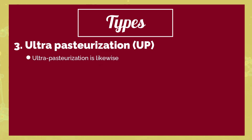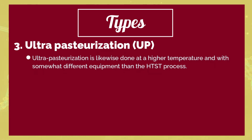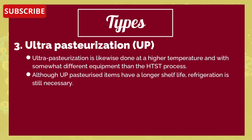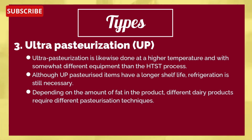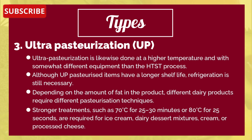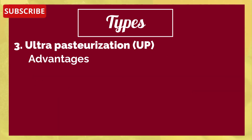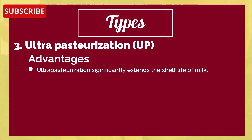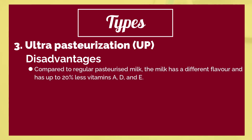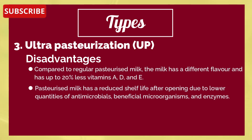The third type is ultra pasteurization, which is done at a higher temperature with somewhat different equipment than HTST. Although ultra-pasteurized items have a longer shelf life, refrigeration is still necessary. Different dairy products require different pasteurization techniques; stronger treatments such as 70°C for 25 to 30 minutes or 80°C for 25 seconds are required for ice cream, dairy dessert mixtures, cream, or processed cheese. Ultra pasteurization significantly extends the shelf life of milk. Disadvantages include different flavor compared to regular pasteurized milk and up to 20% less vitamins A, D, and E, as well as reduced antimicrobials and enzymes after opening.